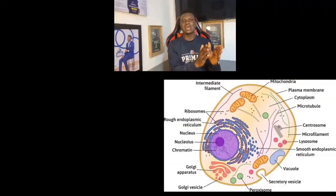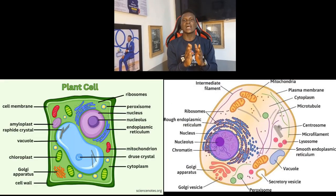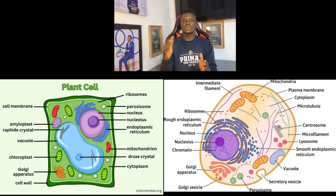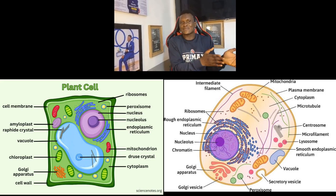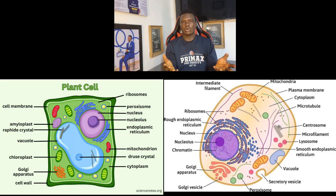Note that three major parts are common to all cells: the cytoplasm, the cell membrane, and DNA. Now, differences between animal and plant cells: animal cells have centrioles, plant cells do not. Animal cells do not have a cell wall, plant cells do. Plant cells have chloroplasts, animal cells do not. Plant cells have a large vacuole; animal cells have either no vacuole or a small contractile vacuole.